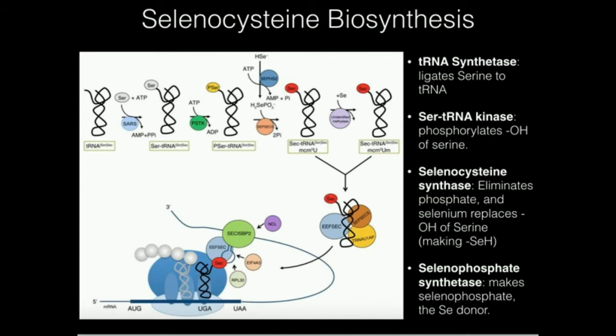The second enzyme here is called a serine tRNA kinase. It's going to use ATP and phosphorylate serine on its hydroxyl group. Remember that serine's R group is an OH, and that OH is going to get phosphorylated by this kinase, making a phosphoserine attached to the tRNA.